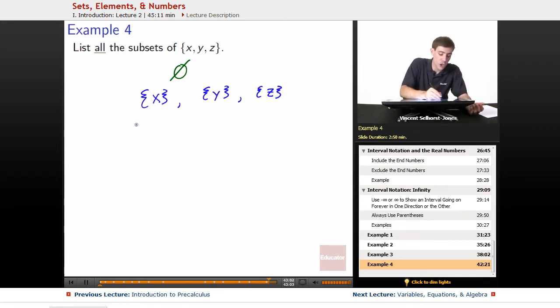Now we can go with the two element ones. All right, well x, y, that's going to be a subset. What about x, z? And then finally, y, z.